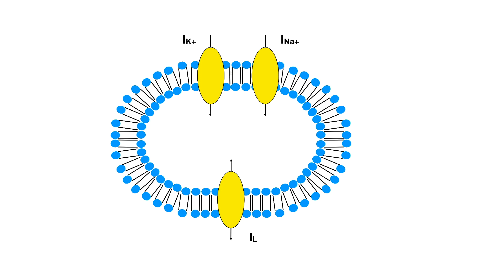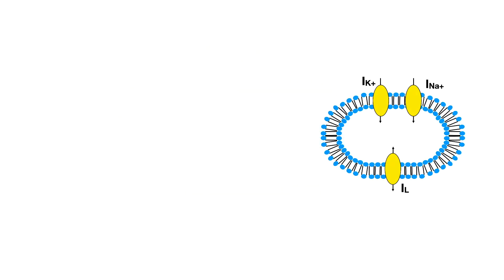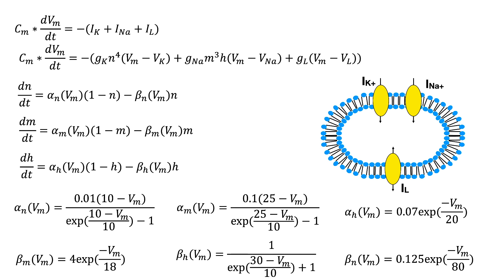The neuron model has three ion channels: one for potassium, one for sodium, and one leak channel. The mathematical equations that represent this cell are the following. Now the question is how we can write this in a simple way and later on use it in a simulation.